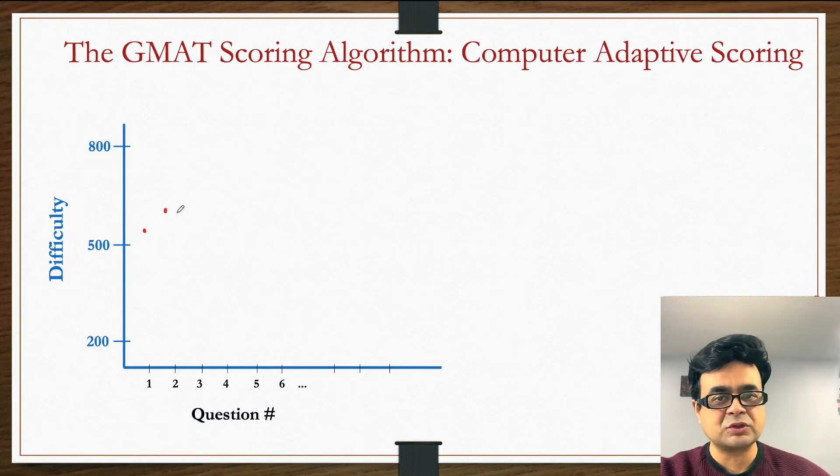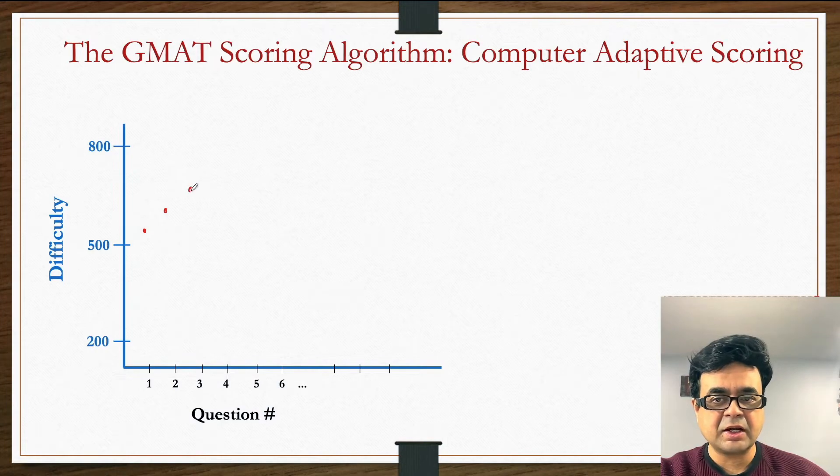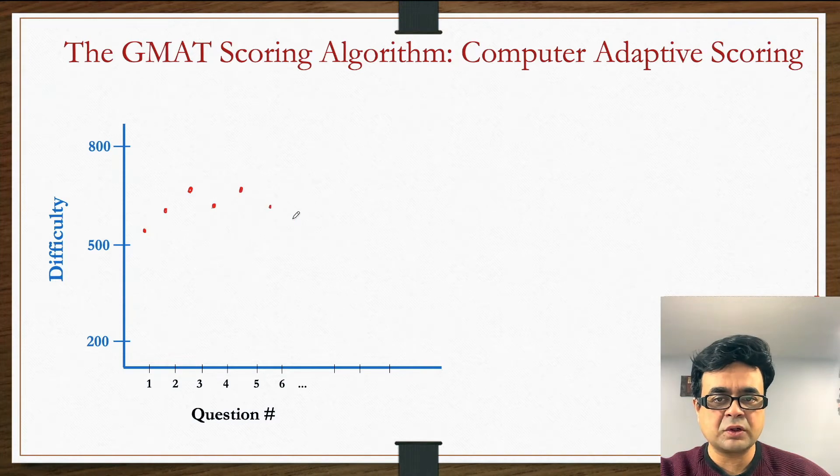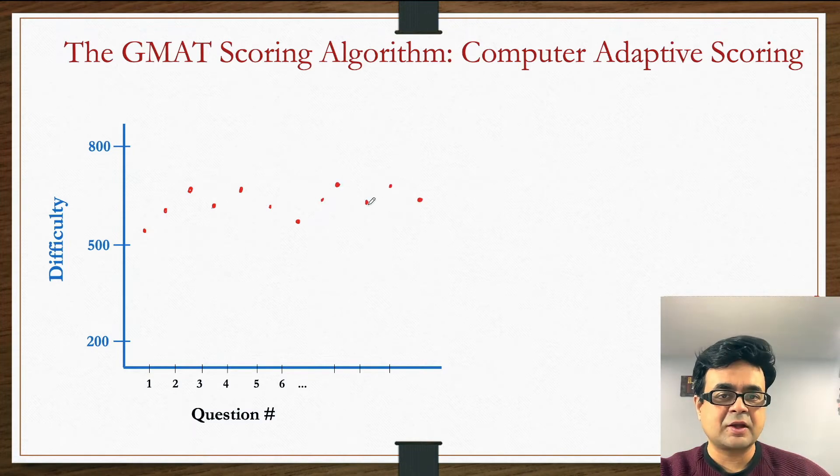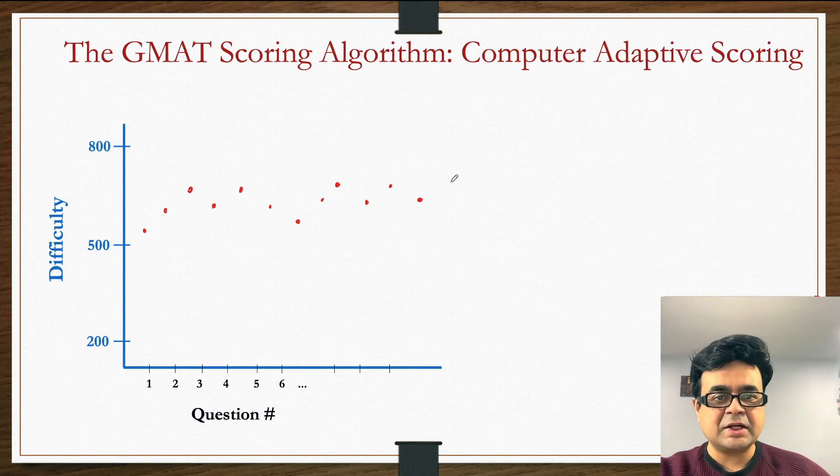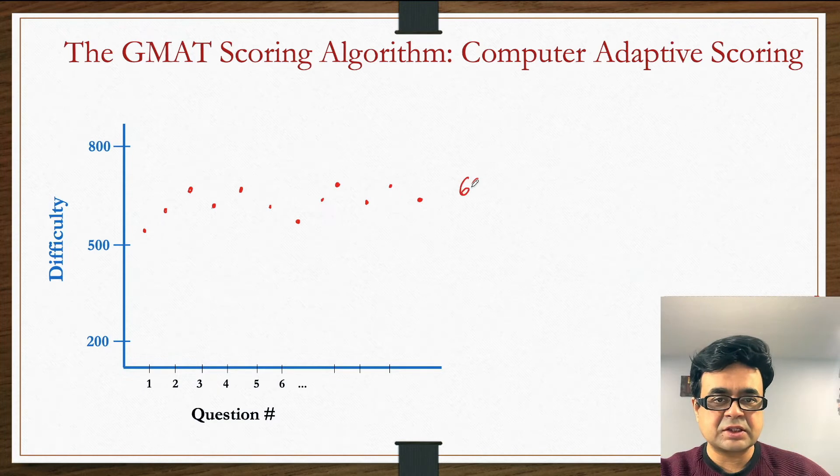I get the second question also right, so I climb up the stair. Let's assume I get the next question wrong, and I get every other question right and wrong, sometimes more than one wrong, sometimes more than one right. Eventually, the computer adaptive scoring will look at the difficulty level of the questions I've gotten right and give me a mark of, let's say, 660, because the average difficulty of the questions I got right was 660.